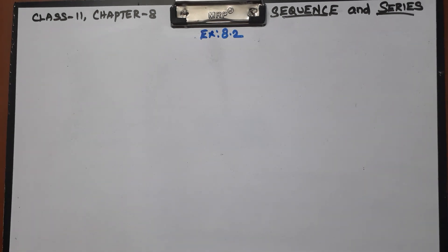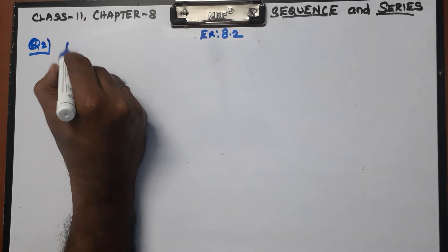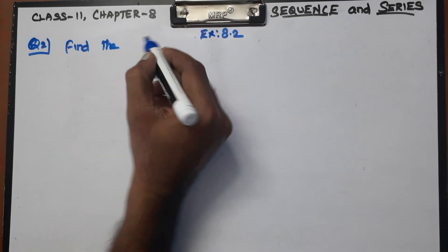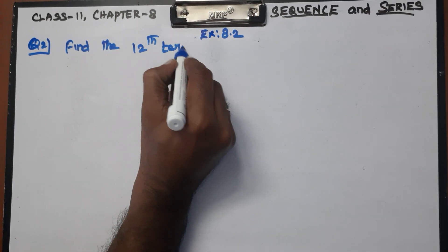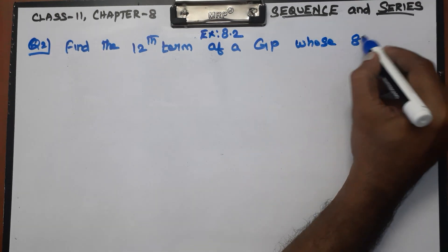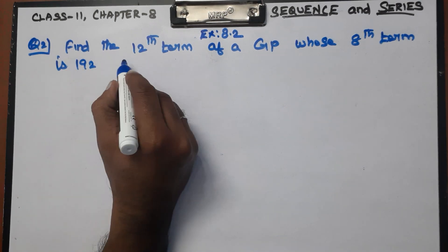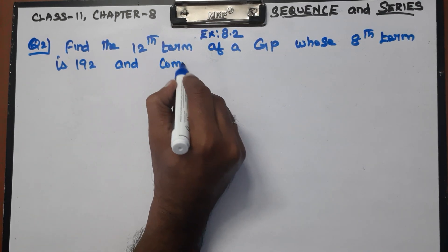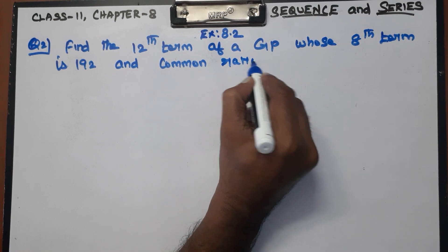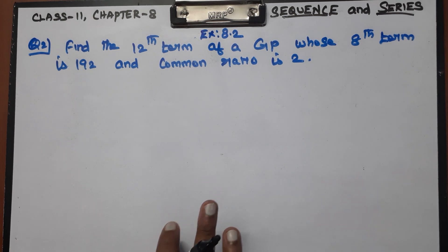Question number 2: Find the 12th term of a GP whose 8th term is 192 and common ratio is 2. We can find the general term of a GP.